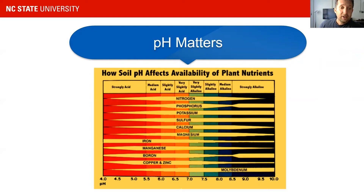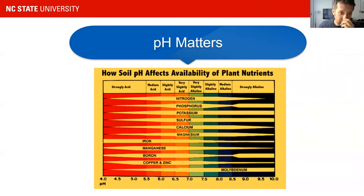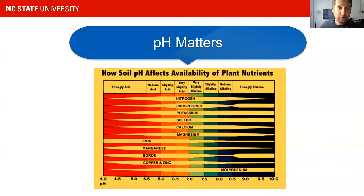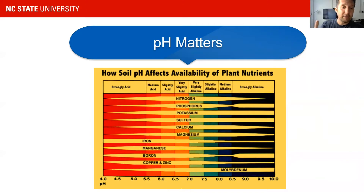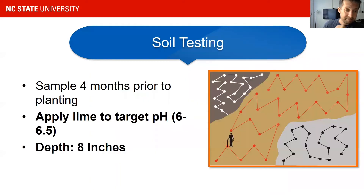To get to that target pH in many areas, you will have to apply lime. Lime usually takes a while to change the soil pH, so you cannot apply lime one week and then the next week plant your strawberries or raise your beds. Lime application usually should happen a couple of months before you raise your beds.